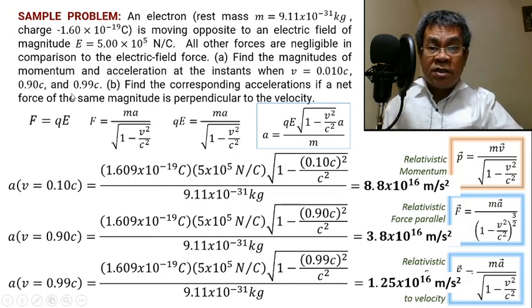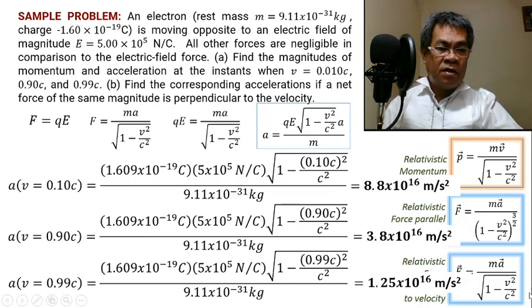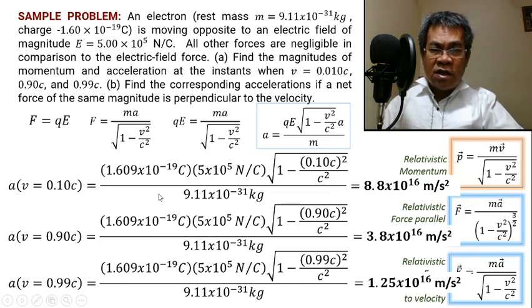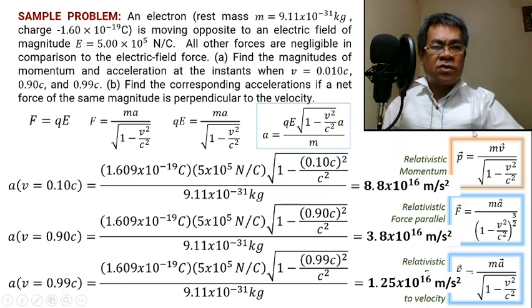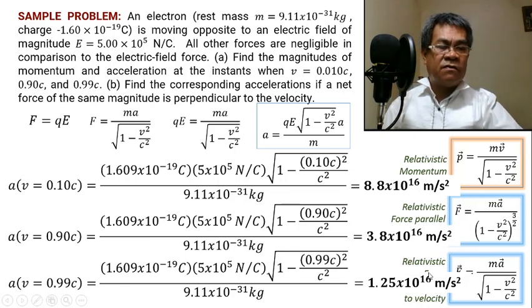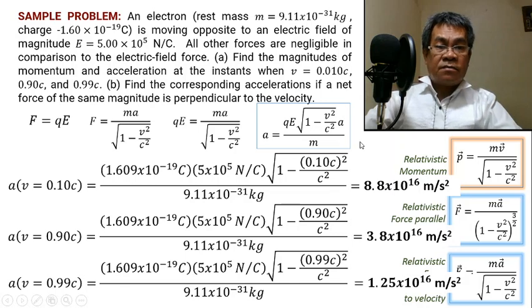The same force is used, but it is perpendicular to the velocity, so we use the perpendicular formula. For the parallel case, we would use the formula with (1 − V²/C²) raised to three-halves. To summarize: remember the formulas for relativistic momentum, the force parallel to velocity, and the force perpendicular to velocity. That covers this topic.